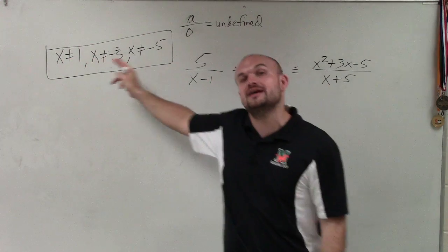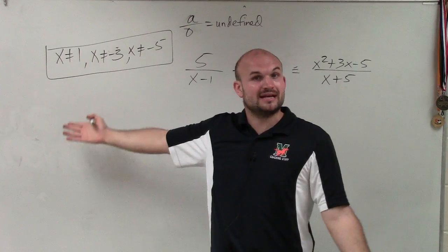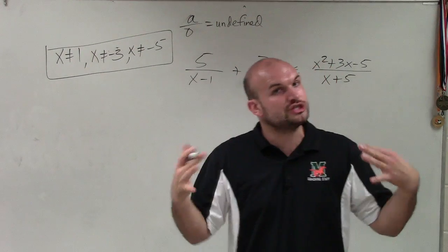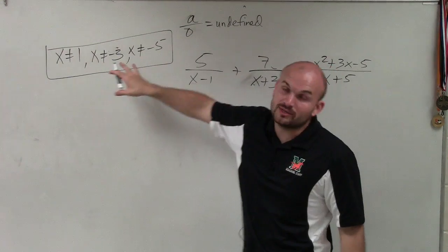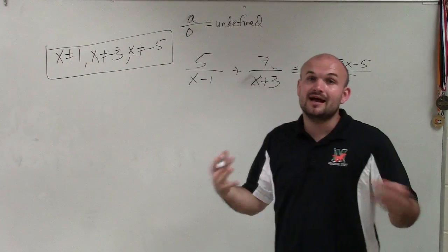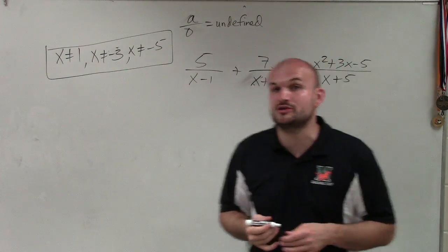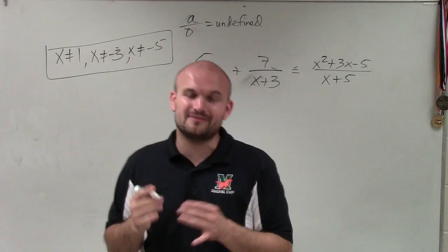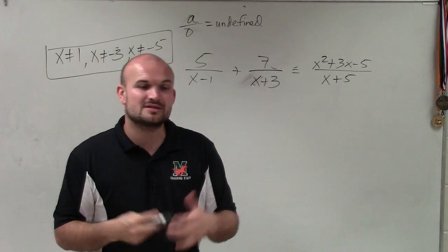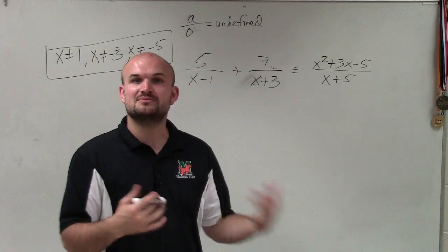And if they are, our values are extraneous and they're not actually going to be a part of them. So it's very important to check your answers. Go back to your original constraints and see if it was there. And there you go, ladies and gentlemen. That is why we put restrictions on, and that is just a little bit of a definition of extraneous roots as well as introduction to asymptotes and holes. Thanks.